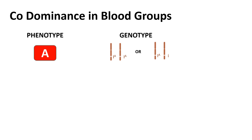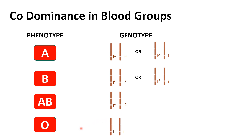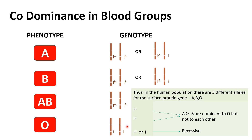Codominance is exemplified in the AB blood group where IA and IB both express themselves completely in each other's presence. For blood group A, the genotype could be either homozygous IAIA or heterozygous IAIO. Similarly for B it is either IBIB or IBIO. For AB the person has both IA and IB. For blood group O, neither IA nor IB are present — what is present is homozygous IO IO. In the human population there are three different alleles for the surface protein gene: IA, IB and IO.